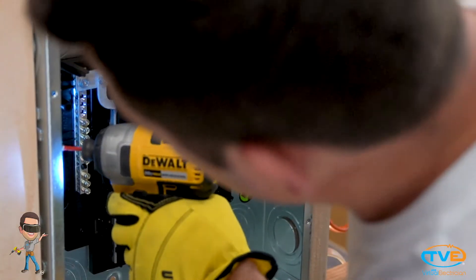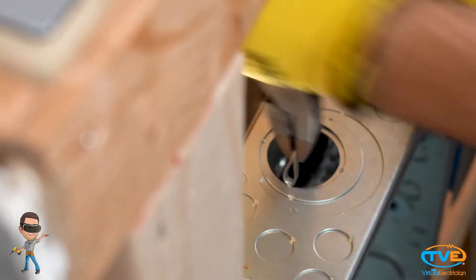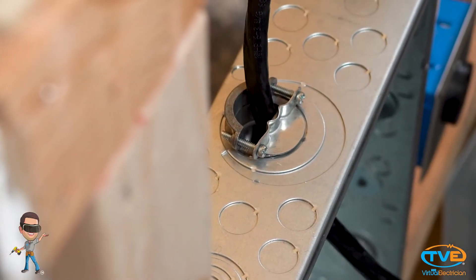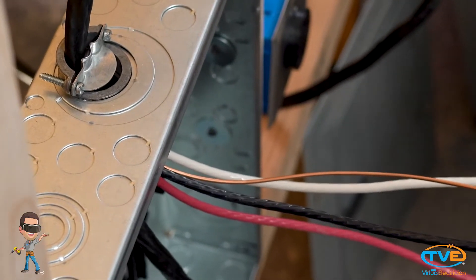First, screw in the sub-panel. Remove the knockouts from the sub-panel. Install 6-3 wire from main panel to sub-panel. This wire is rated for 60 amps.